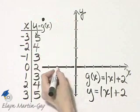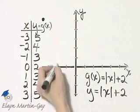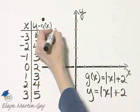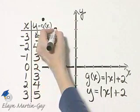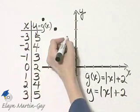At negative 2, 4. 1, 2, 3, 4. So negative 2, 4. At negative 1, 3.